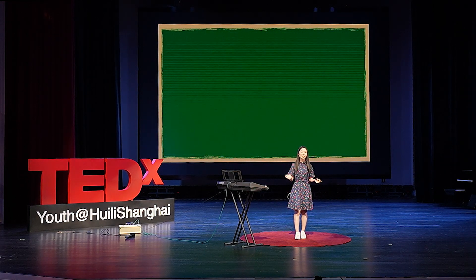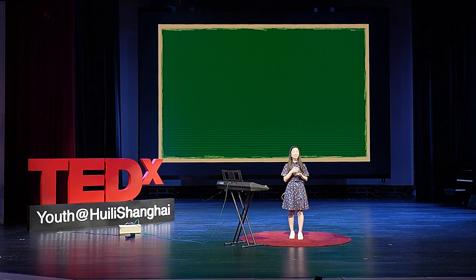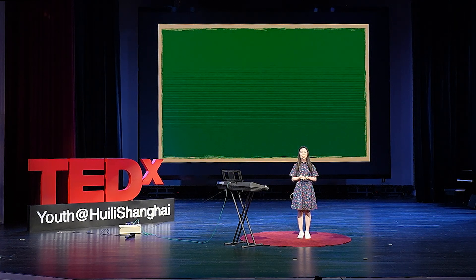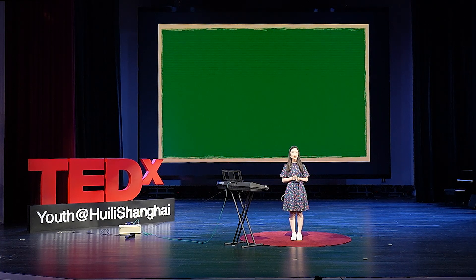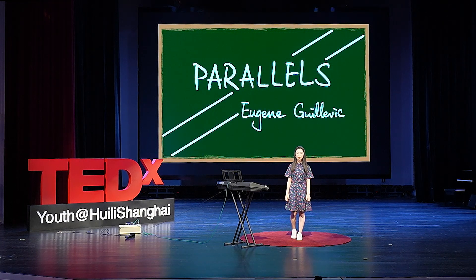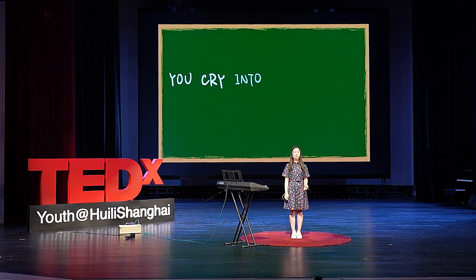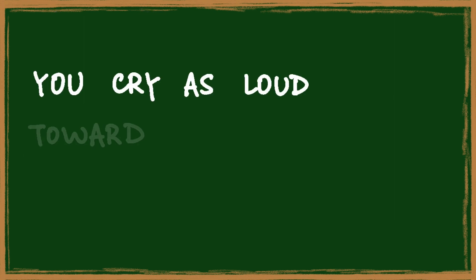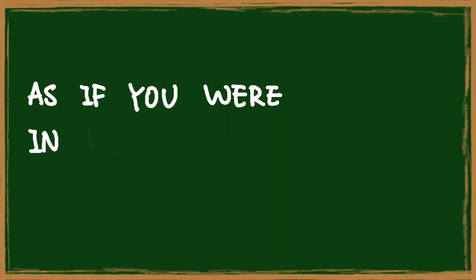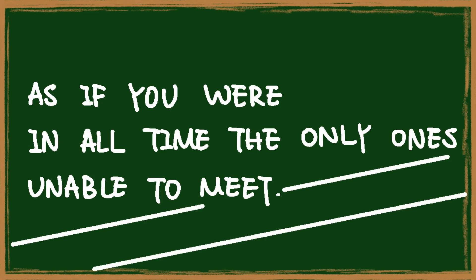I always love hunting for the connections between mathematics and literature and arts, and it just feels wondrous to switch my perspective to view the whole world. I can always spot a mathematical part in a piece of artwork, and I can discover philosophical ideas and create art through maths. I want to end my talk with an example of maths in literature — a poem, 'Parallels,' by Eugene Guillevic: 'You cry into space which has to separate you. You cry as loud towards that other space that you cut in half, as if you were in all time the only ones unable to meet.' Thank you.